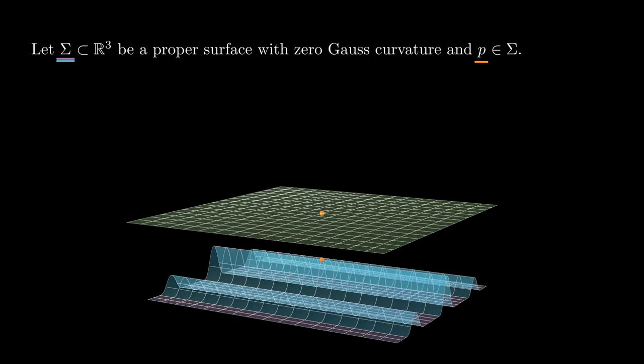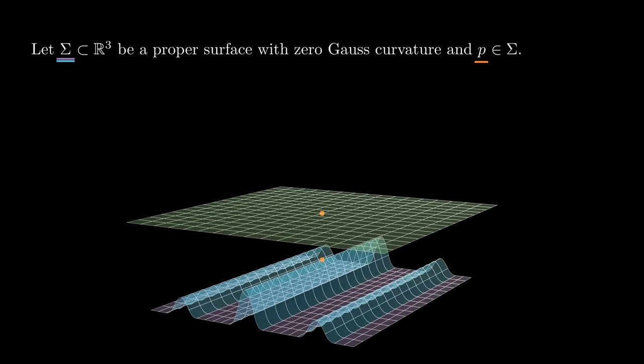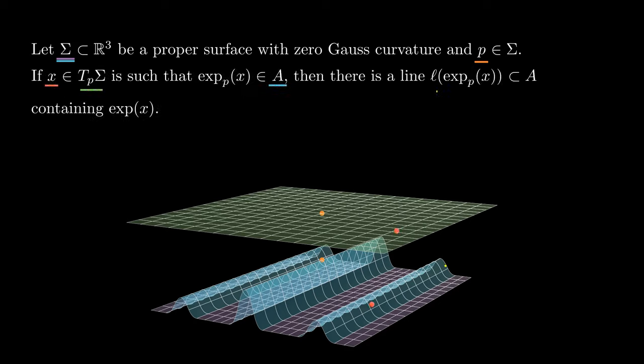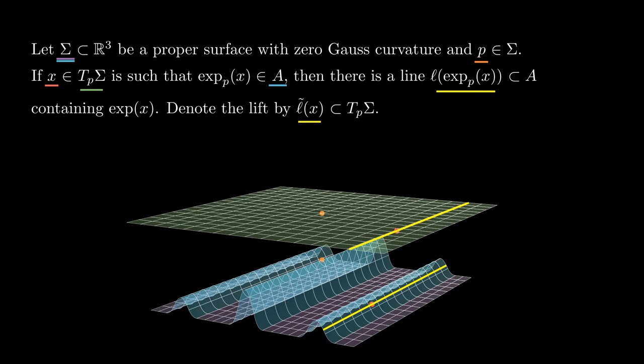Now we turn back to our proper surface sigma with zero curvature. Take p in sigma. Since the curvature is non-positive, the exponential map is a covering map, and its differential is non-contracting at each point. Since the curvature is non-negative, the differential of the exponential map is also non-expanding at each point. Therefore, the exponential map is a local isometry from the tangent plane to the surface sigma. Then for each x in Tp sigma with exp(x) in A, we know there is a unique line L passing through exp(x) and fully contained in A. We can lift this line to Tp sigma via the exponential map, and since it is a local isometry, this line is lifted to a line passing through x, which we call L tilde of x.